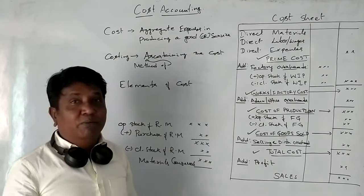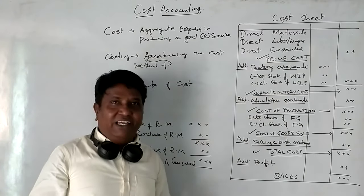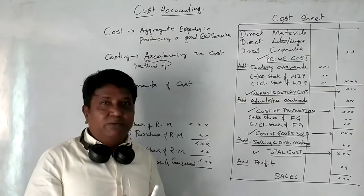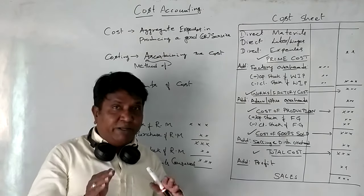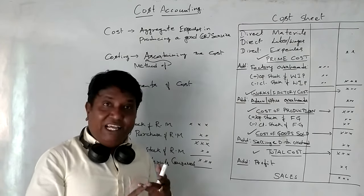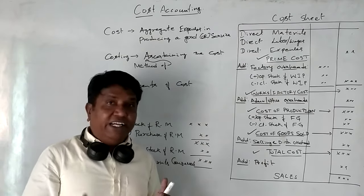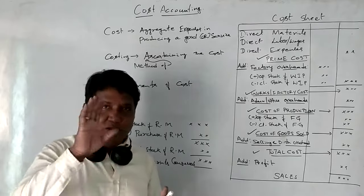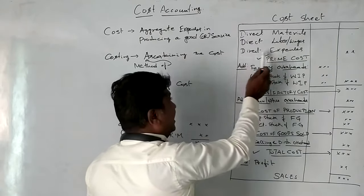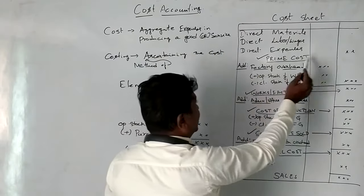The first element is Prime Cost. Prime Cost covers the primary, or major, expenses. These include direct material, direct labour or wages, and direct expenses. When you add direct material, direct labour, and direct expenses together, you get Prime Cost.